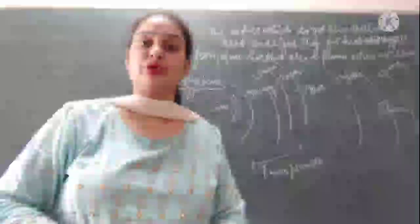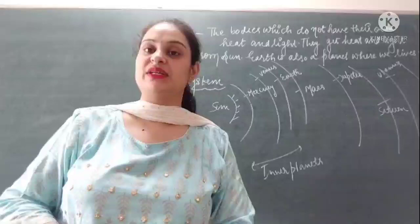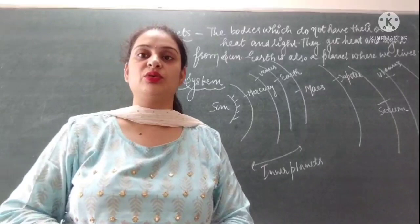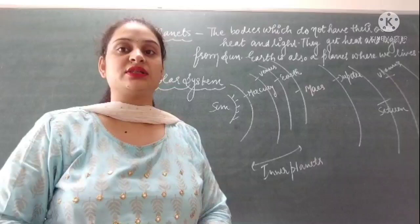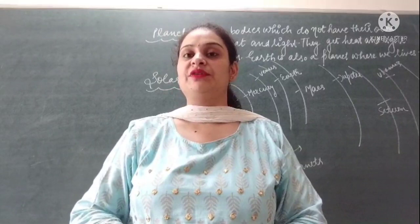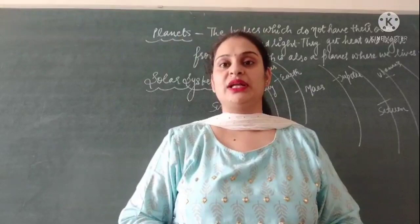Good morning class, welcome to your social studies. In the earlier chapter we discussed about our earth and solar system. In the previous video we discussed about the sun and the moon. We discussed that the moon changes its shape on a regular basis because the moon revolves around the earth, and due to the revolution of earth around the sun we have day and night. We also discussed the different phases of the moon and the different types of gases found in our atmosphere, and that the sun has its own heat and light, which is why the sun is called a star.